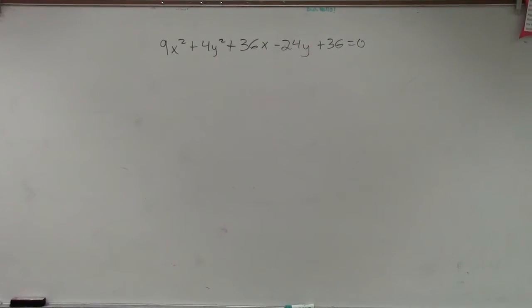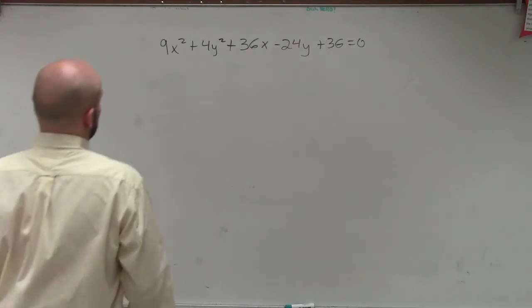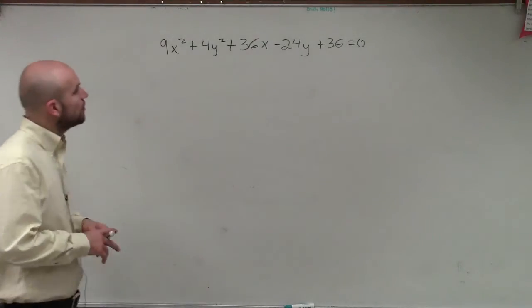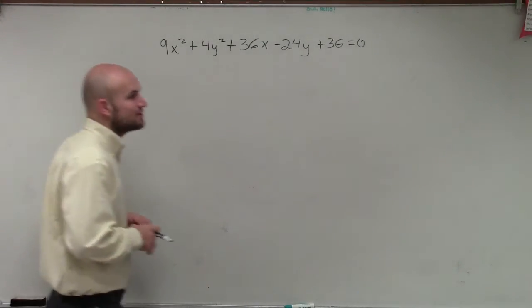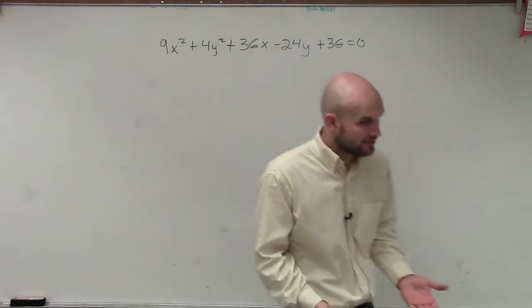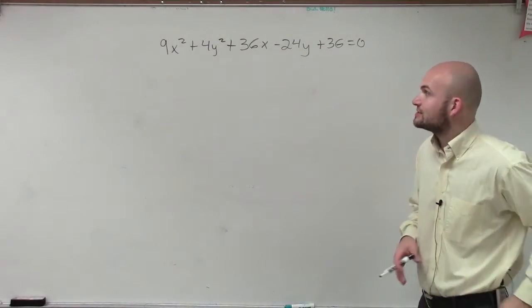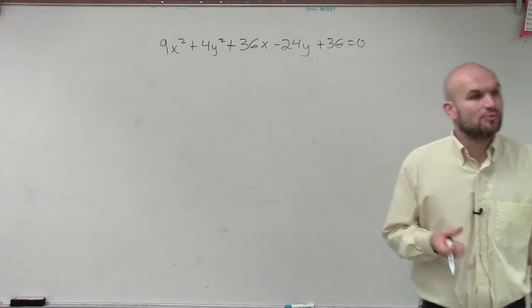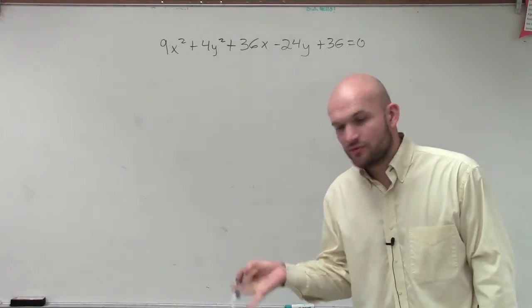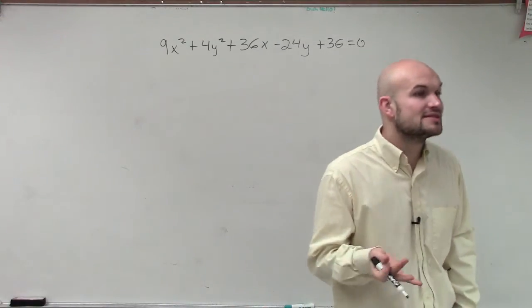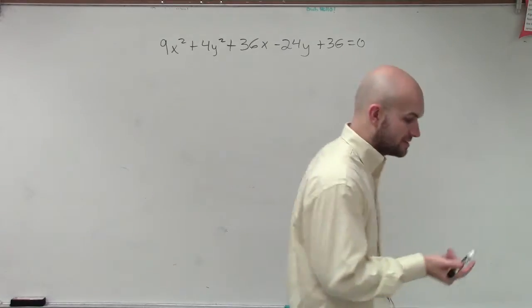Alright, so what I have here ladies and gentlemen is 9x² + 4y² + 36x - 24y + 36 = 0. And what we're trying to do is determine what the foci, the vertices, and the center is going to be for this ellipse.